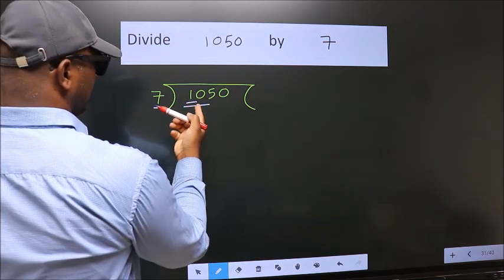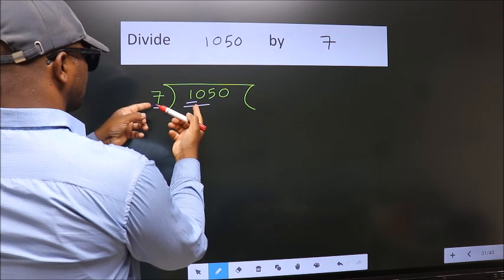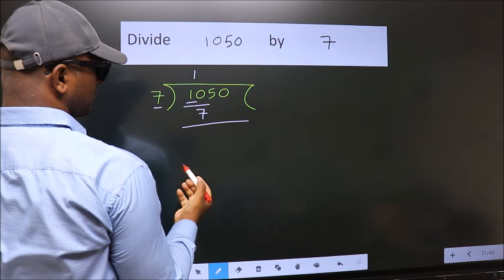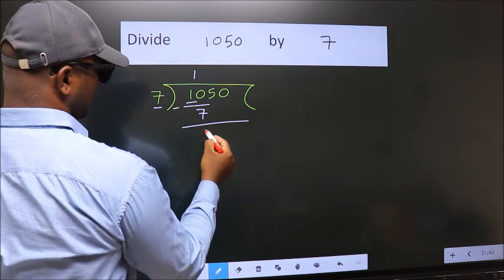A number close to 10 in 7 table is 7 ones, 7. Now we should subtract. We get 3.